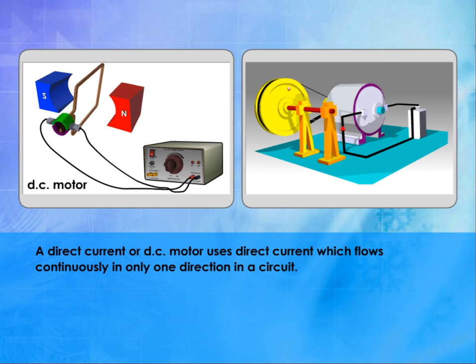A direct current or DC motor uses direct current which flows continuously in only one direction in a circuit.